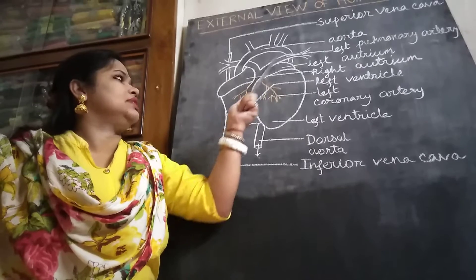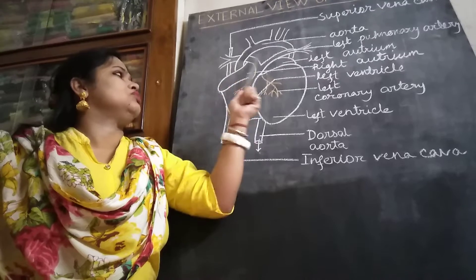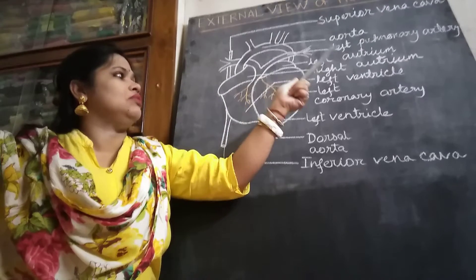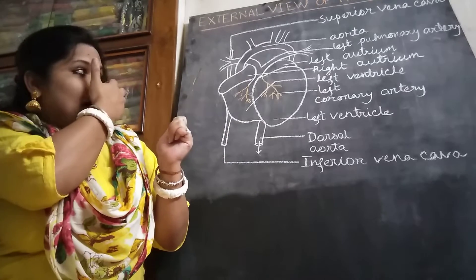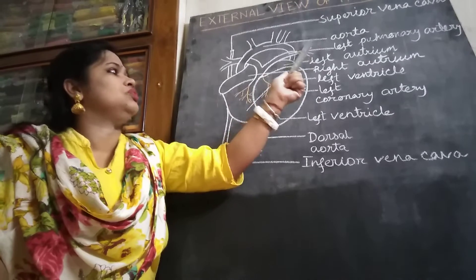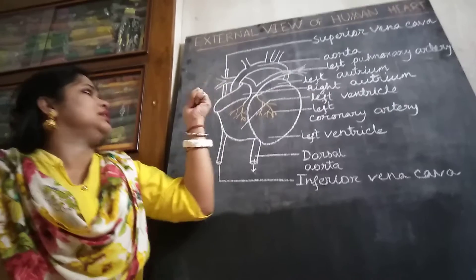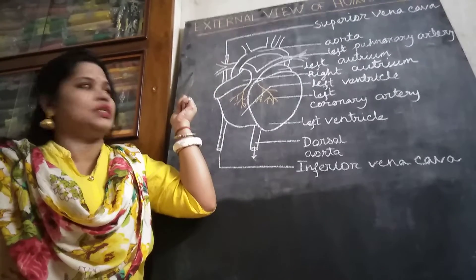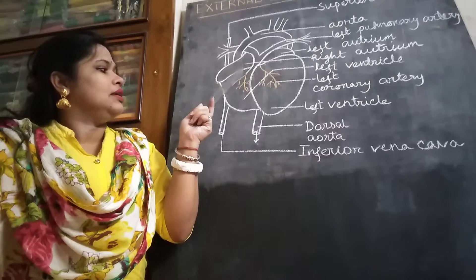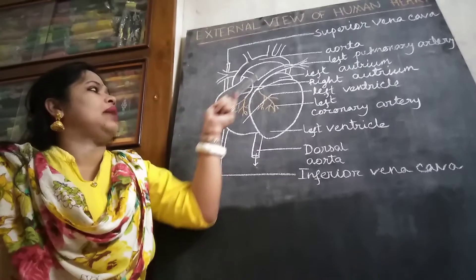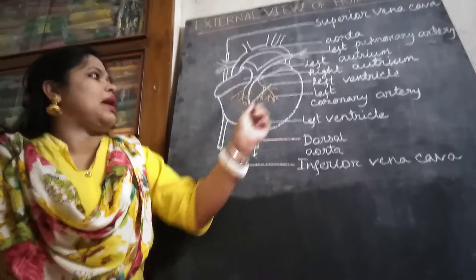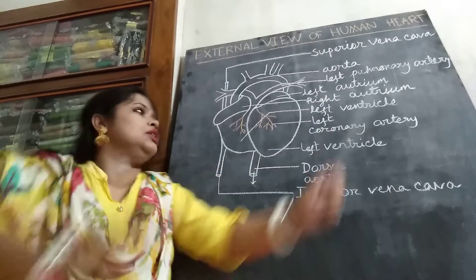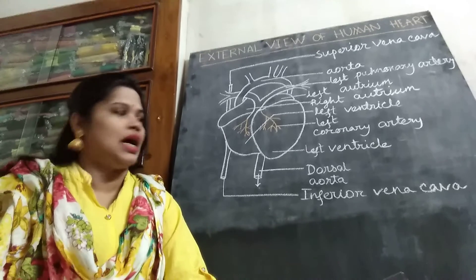From the right ventricle, one blood vessel is passing and bifurcates into two different sides — this is known as the pulmonary artery. One branch goes to the left hand side, so it is the left pulmonary artery; one goes to the right hand side, so it is the right pulmonary artery. This blood vessel passes towards the pulmonary system, meaning the lungs.